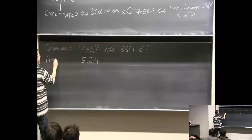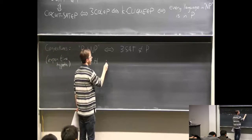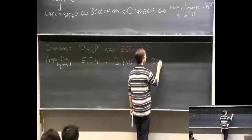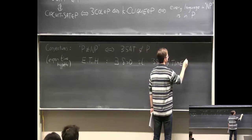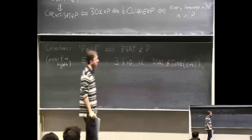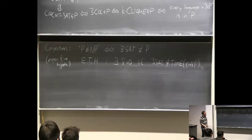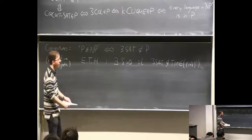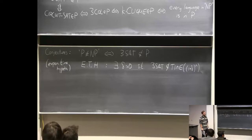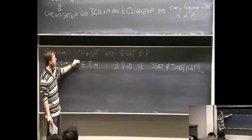There's another conjecture called ETH — the Exponential Time Hypothesis. It says there exists a positive delta such that 3SAT cannot be done in (1 + delta)^n time. Maybe you can get it down to 1.31^n or 1.01^n, but there's some limit — maybe you cannot do it in 1.0001^n. Roughly equivalently, it's saying you can't get a really sub-exponential algorithm — even 2^{n^{0.99}} is impossible. ETH implies P does not equal NP.